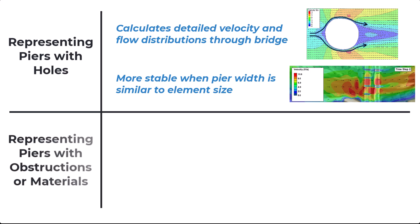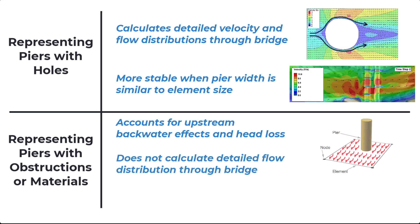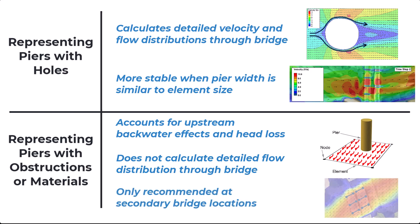Using obstructions for piers can adequately represent upstream backwater effects and account for head loss due to the piers, but does not provide detailed flow characteristics through the bridge. For this reason, they are only recommended for use at secondary bridge locations that are not the main focus of the model.